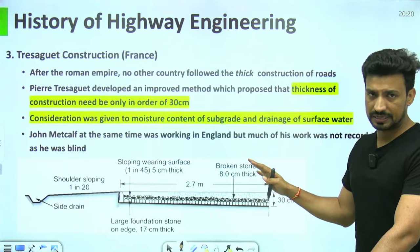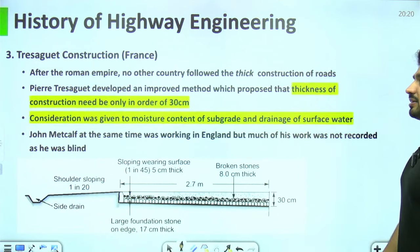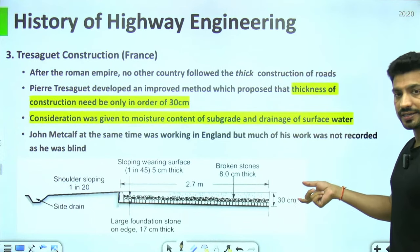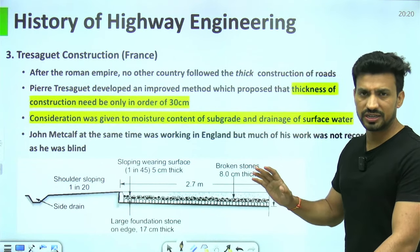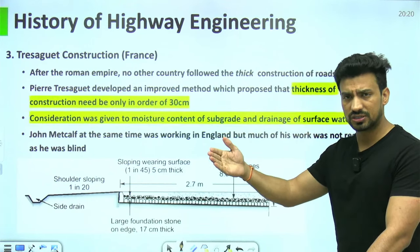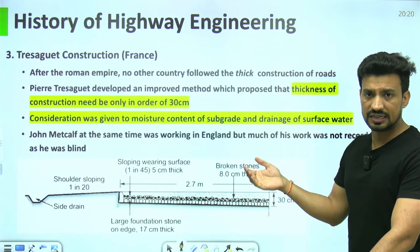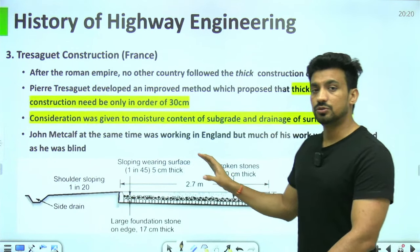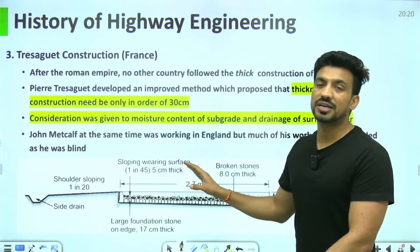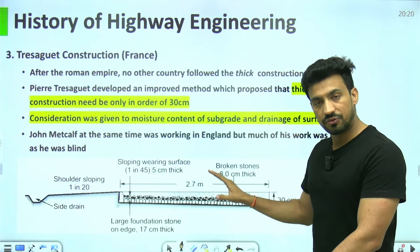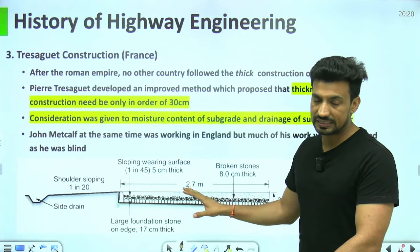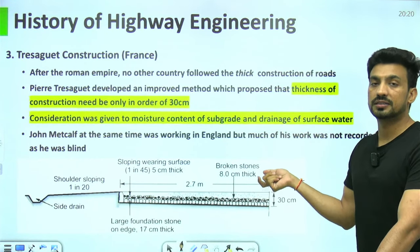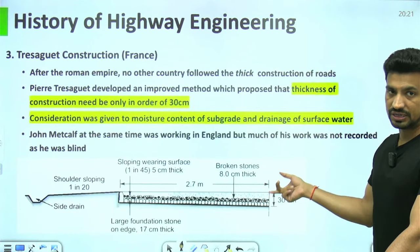France में Tresaguet construction में improvement हुआ — बताया गया कि pavement की thickness 30 cm के order की भी रखी जा सकती है। इसमें slope 1 in 45 का provide किया गया। Shoulders का slope 1 in 20 था, और pavement या surface का slope 1 in 45 था।